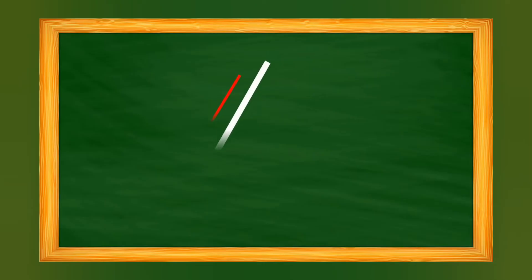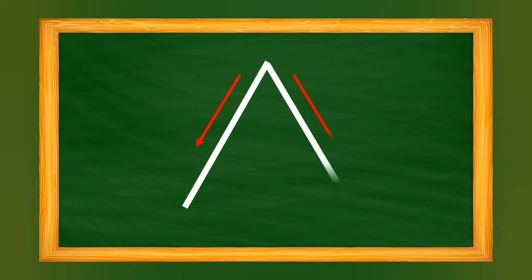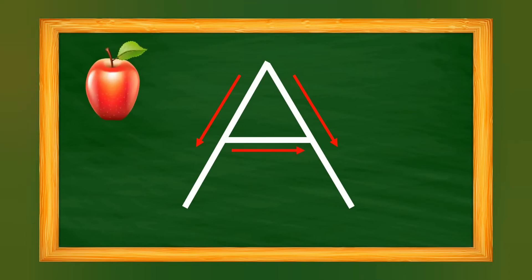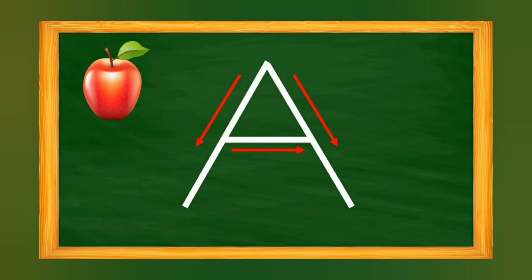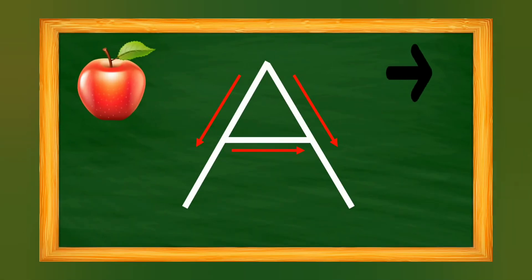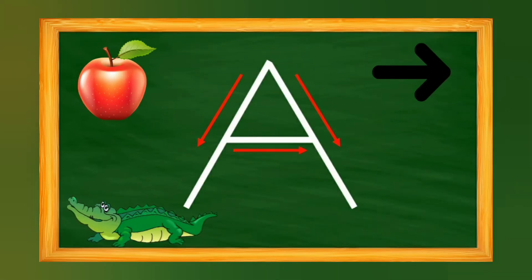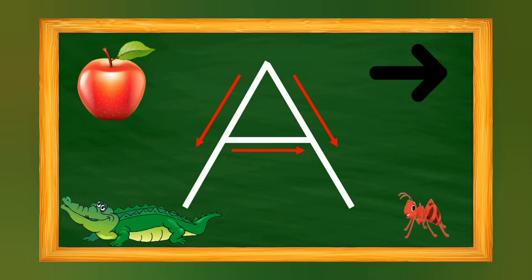We are going to start with a right-to-left slanting line first, and then a left-to-right slanting line, and then a sleeping line. This is capital A. A says apple, A says arrow, A says alligator.